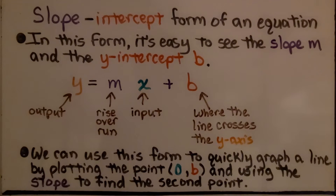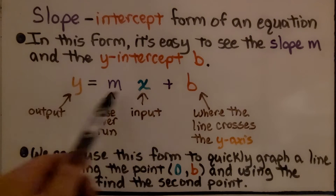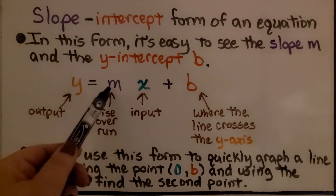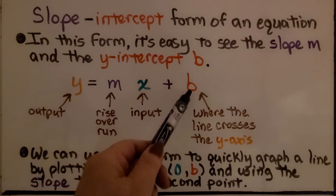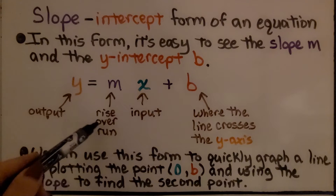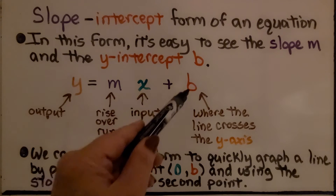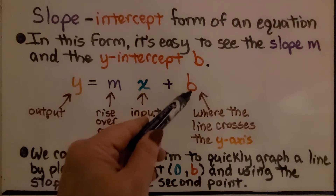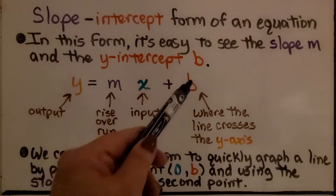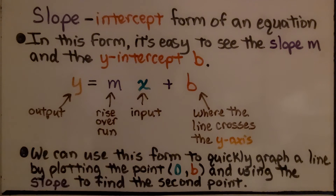This is the slope-intercept form of an equation. In this form, it's easy to see the slope m and the y-intercept b. This is the output. The slope is the rise over the run. The x is the input, and b is where the line crosses the y-axis. We can use this form to quickly graph a line by plotting the point 0 for x and b for y, and using the slope to find the second point.